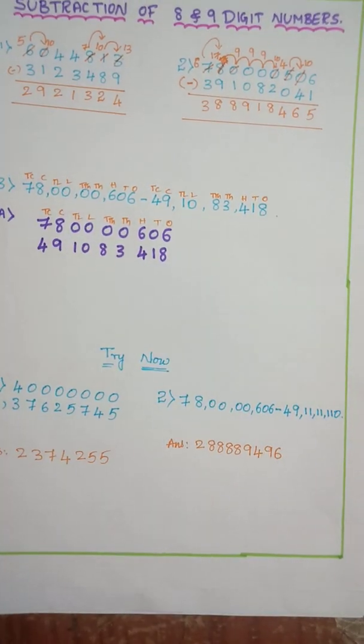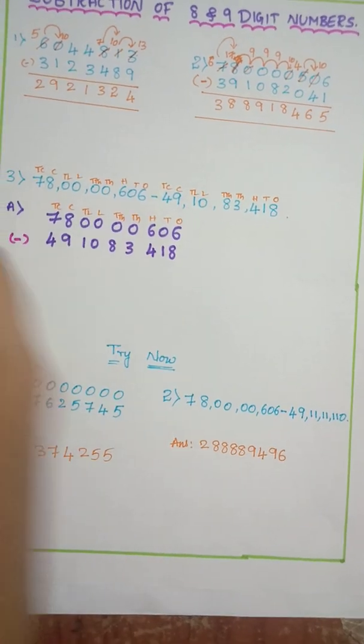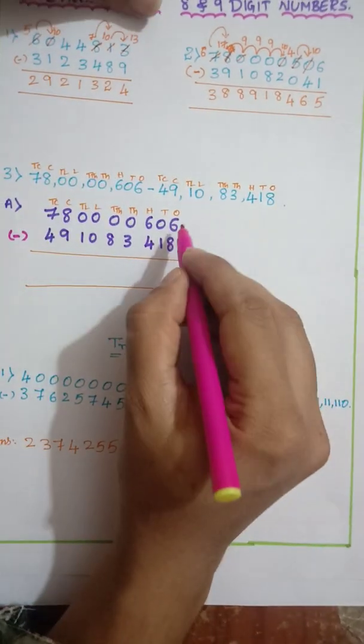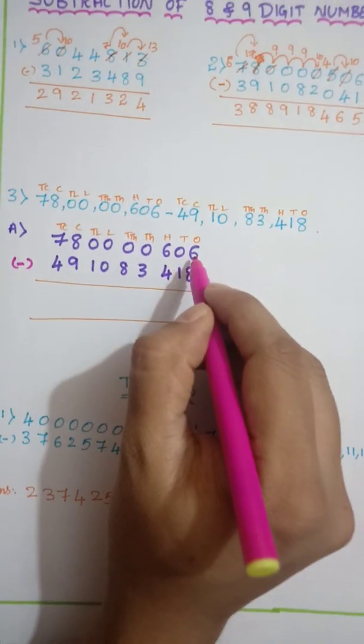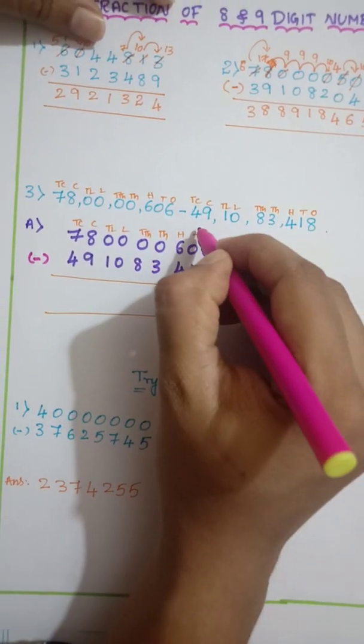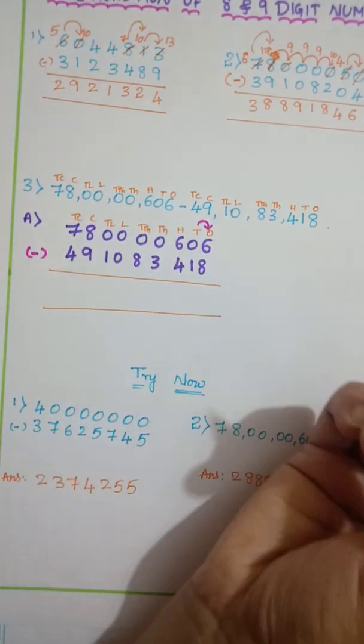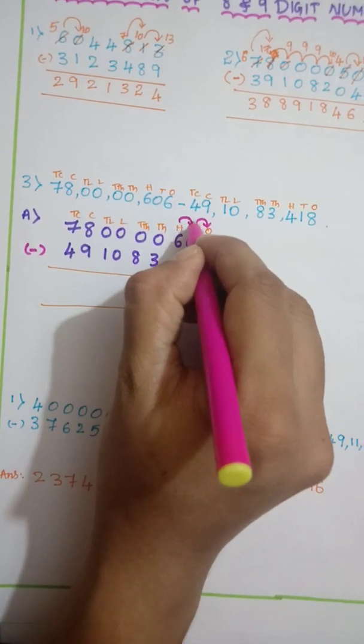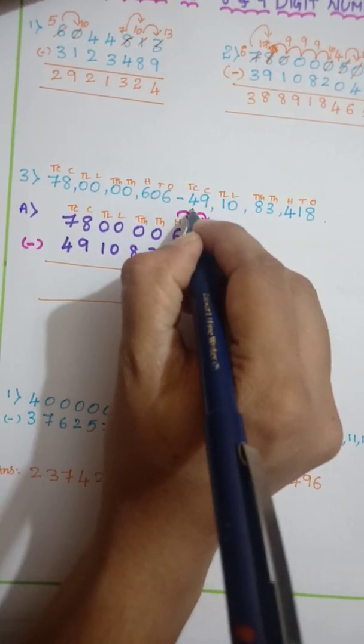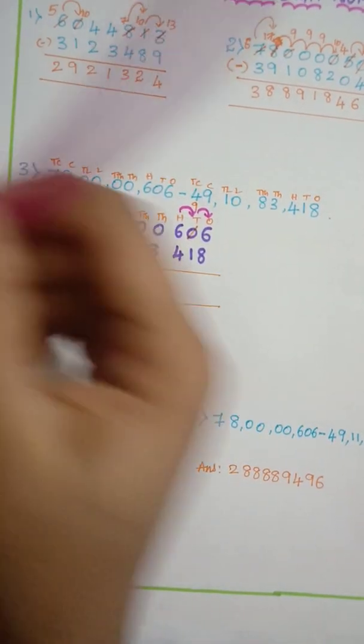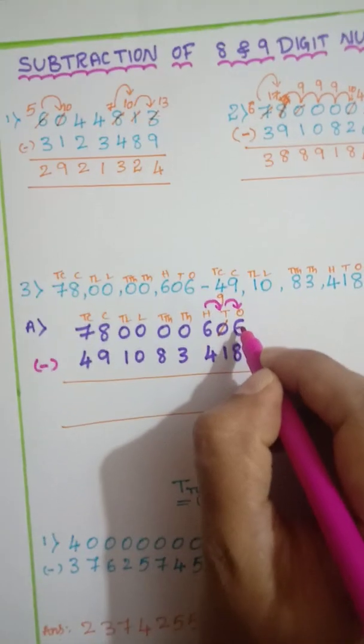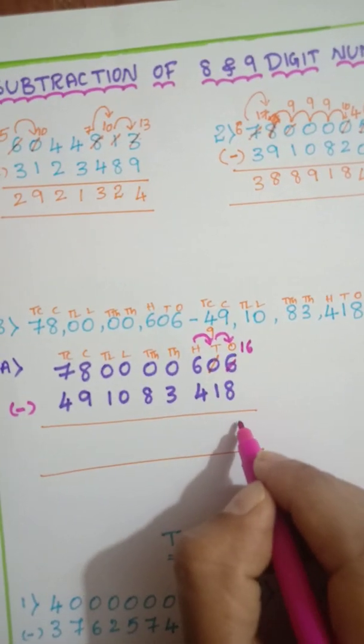Once we are done with it let us do the subtraction. So what symbol we use for subtraction? Minus symbol. So now six minus eight same thing here also. So from six can you subtract eight? No. So for that what you have to do you have to take borrow. Here no borrow because zero is there. So from six to here you will take borrow. So that this zero it will become ten. And again from ten if you take borrow it will become nine. So here. So now when you take borrow it will become sixteen. Sixteen minus eight is eight.